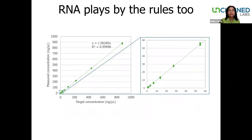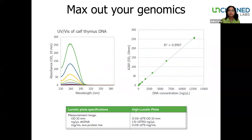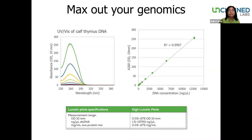We also see similar accuracy and reproducibility with a calf liver RNA dilution series — note again the same great results at lower RNA concentrations. Groups producing plasmids, for example, are typically working with high concentrations. I spoke with a customer recently who was getting variable results due to sample dilutions required with their own method, and for that group, Lunatic was a great solution because they could read high-concentration samples without dilution. The highest concentration of DNA in this dilution series was 12.8 micrograms per microliter, and you can see the nice R-squared value showcasing the high correlation.